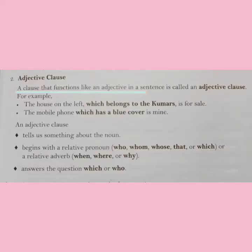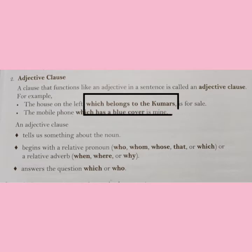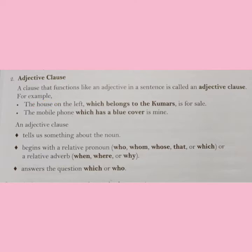A clause that functions like an adjective in a sentence is called an adjective clause. For example: 'The house on the left which belongs to the Kumars is for sale.' Here, the words 'which belongs to the Kumars' is an adjective clause as it modifies the noun 'house.' An adjective clause tells us something about the noun.